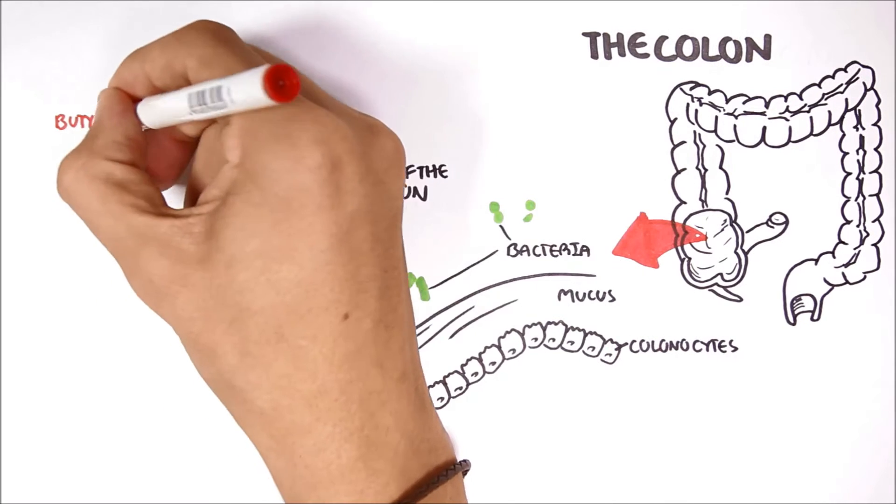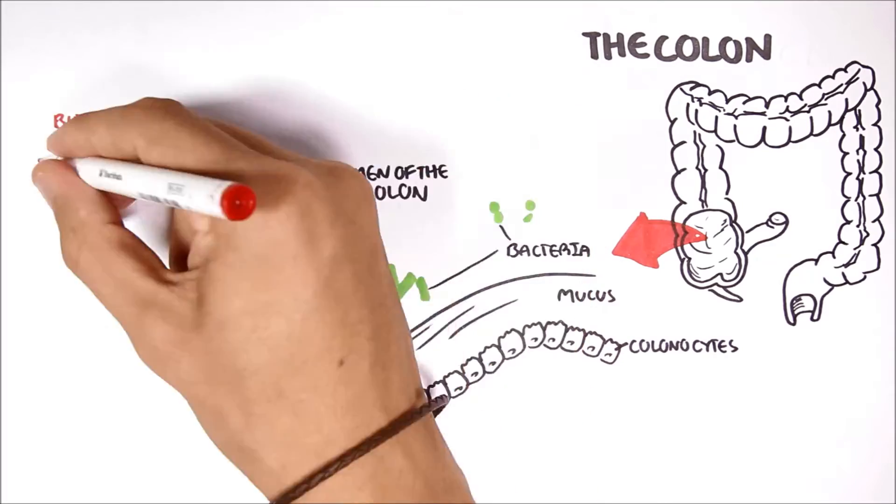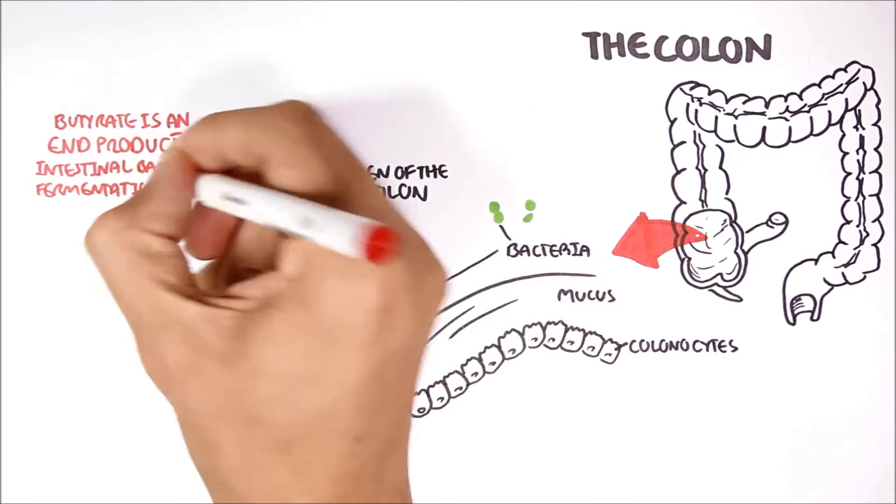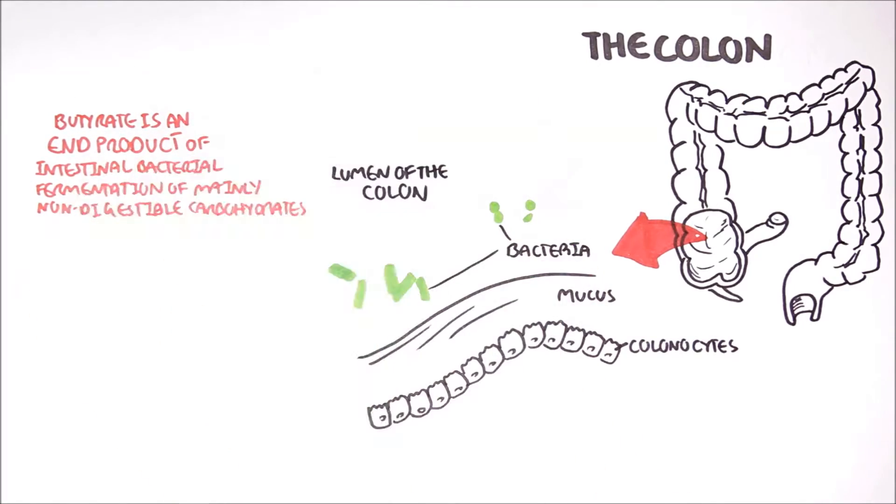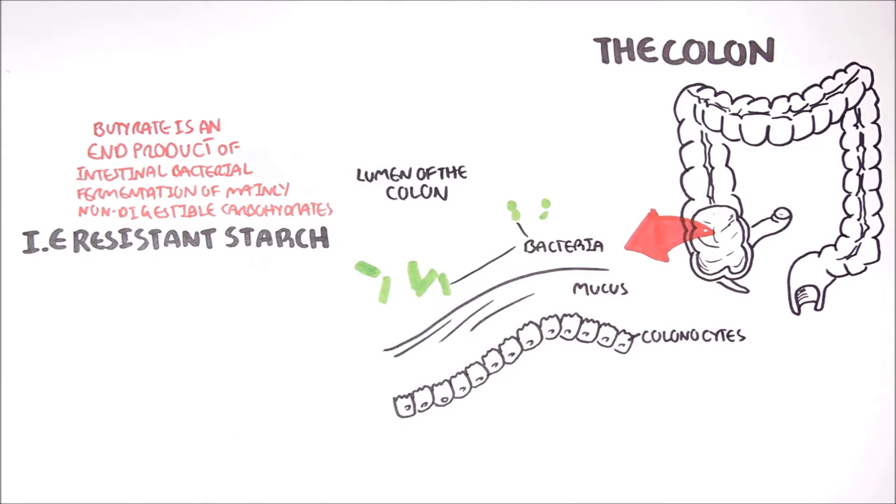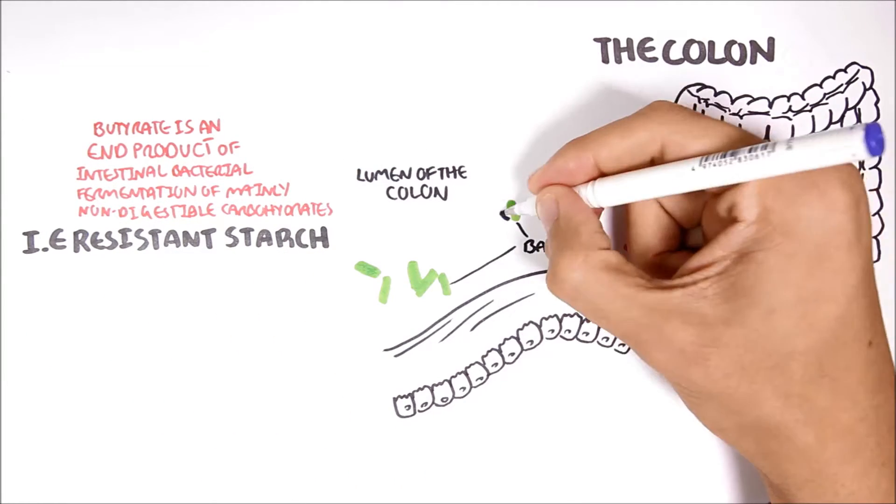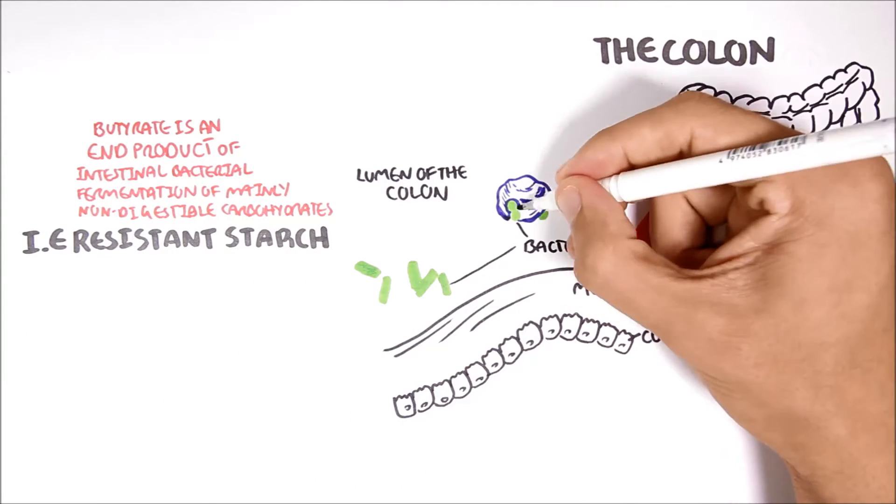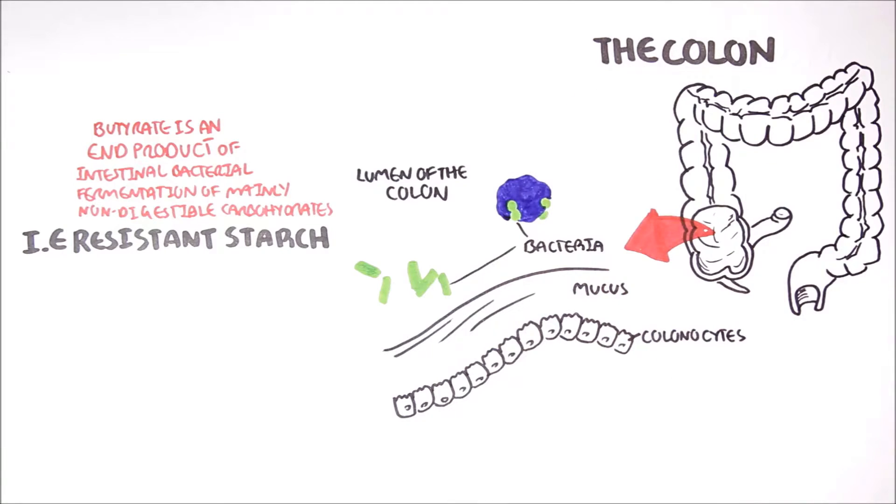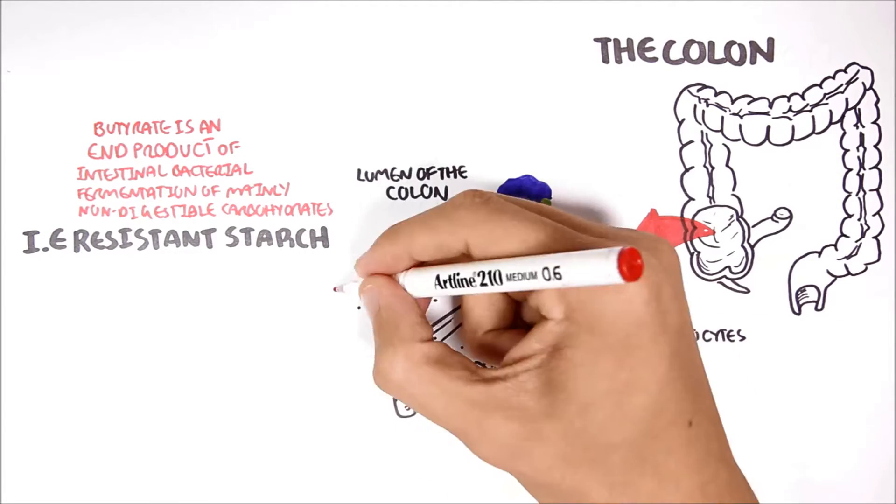Butyrate is an end product of intestinal bacterial fermentation of mainly non-digestible carbohydrates, such as resistant starch. So here we have resistant starch which has reached the colon. Bacteria will ferment the resistant starch, and through cross-feeding with other bacteria, butyrate is produced.